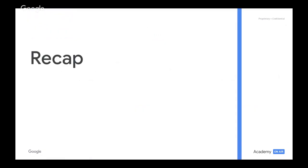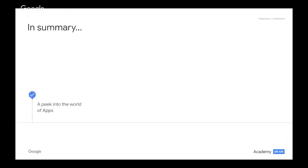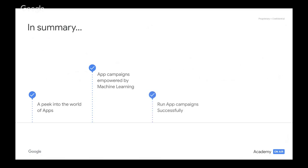Let's quickly recap so your learnings stick around. In summary: the apps opportunity is significant — if you're not already working with apps to grow your clients' business, now is the right time. Machine learning has changed the game for online advertising, and you can use it to your advantage. Running successful campaigns requires you to focus on setting the right goals, the right bids and budgets, and ensuring creative excellence and tracking impact and measuring success. As we've shown you, other businesses are using app campaigns successfully, so you can too.